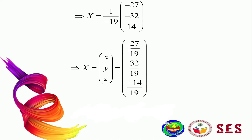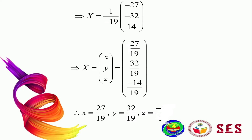Since X equals the column vector of x, y, and z, we multiply 1 over negative 19 into the matrix. Therefore x equals 27 over 19, y equals 32 over 19, and z equals negative 14 over 19. That is how you solve the system of linear equations using the inverse matrix method.